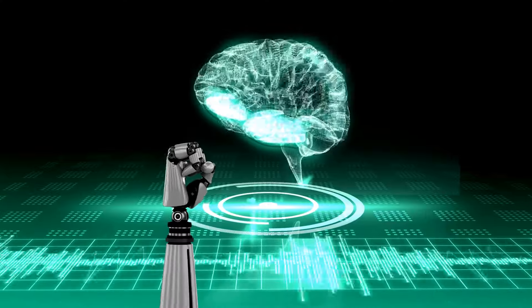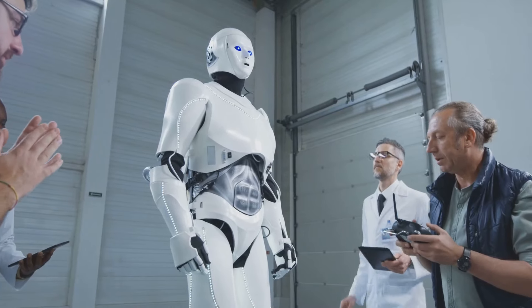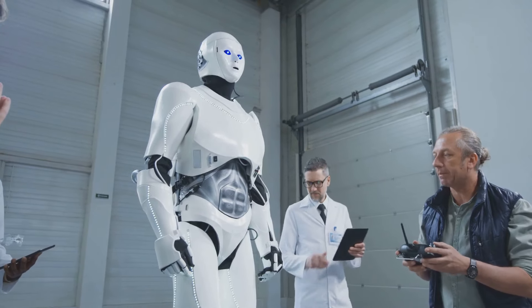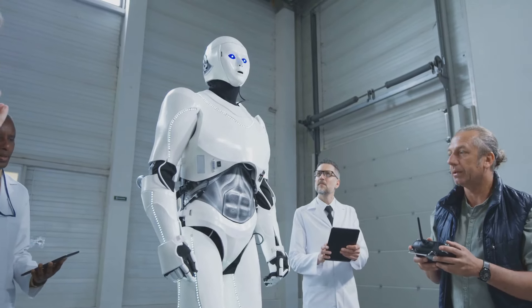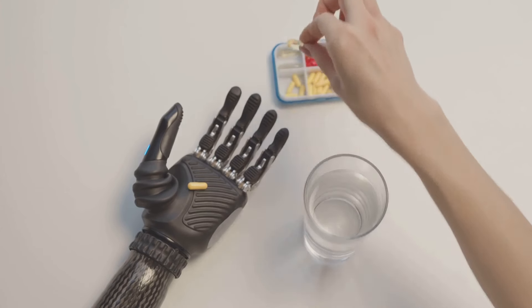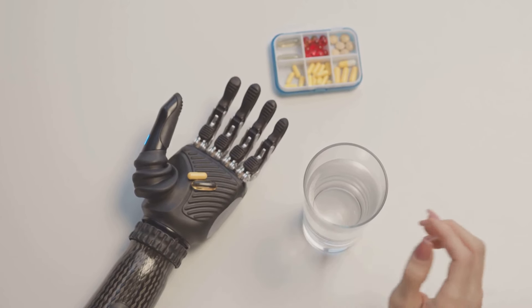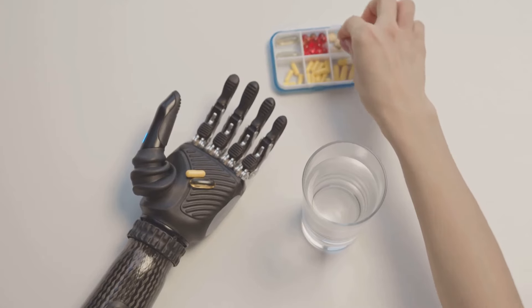This AGI-ready design allows John to perform tasks that require complex reasoning, problem-solving, and fine motor skills. Previous humanoid robots often struggled with tasks that humans perform effortlessly, such as manipulating objects, opening doors, or handling delicate instruments.